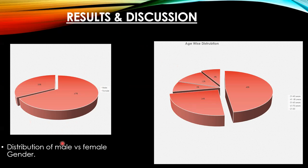Regarding gender distribution, this pie chart demonstrates the distribution of male versus female gender. My study shows that 67% of males were affected and 33% of females were affected.